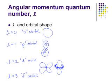L can be higher than 3 if you're in a high enough energy level. After the F orbitals come G, then H, then I, and so on.